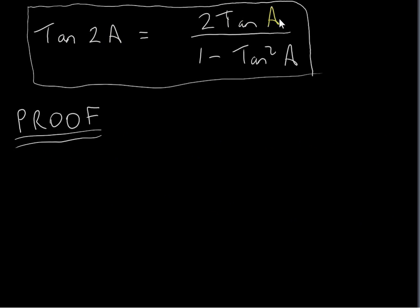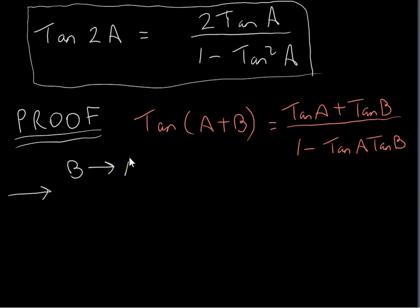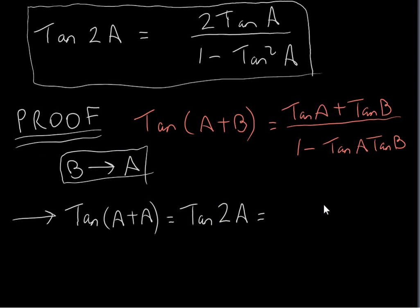Next, we have tan(2A) = 2tanA / (1 − tan²A). We use the compound angle identity proven in a previous video: tan(A + B) = (tanA + tanB) / (1 − tanA tanB). Again, we replace B with A, giving tan(2A) on the left. On the right, we get tanA + tanA — that's 2tanA — and underneath we get 1 − tanA times tanA, which is 1 − tan²A.